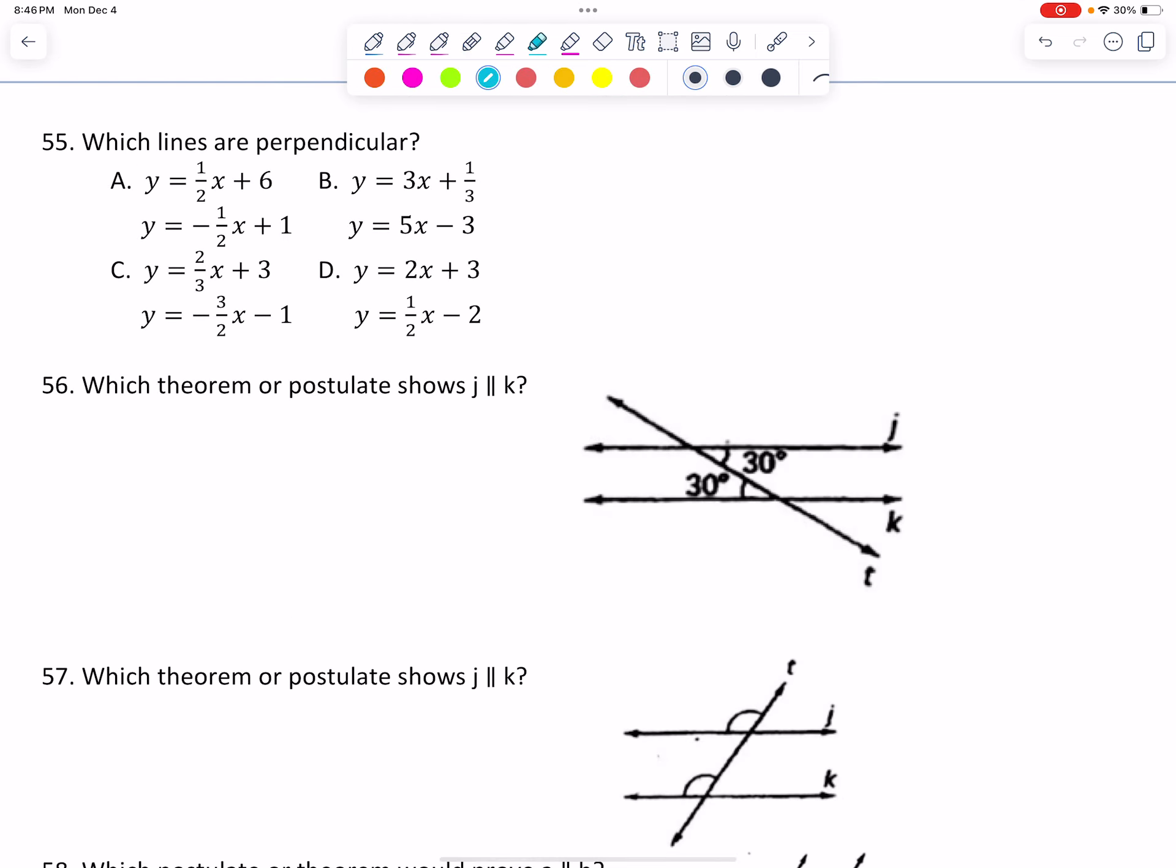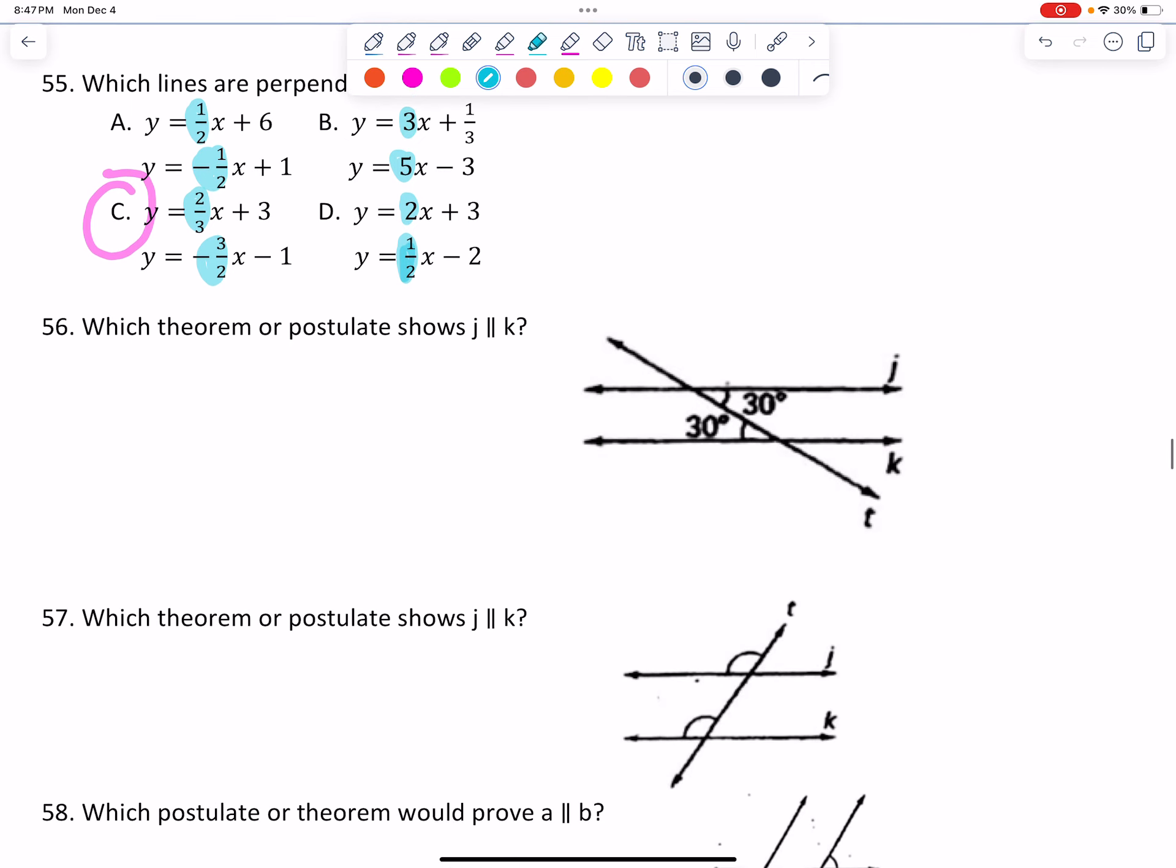Which lines are perpendicular? Again, we're just looking for opposite reciprocal slopes. That's one half. It's negative one half. It's not flipped and switched. This is three. This is five, not flipped and switched. This is positive two thirds. This is negative three halves. I'm thinking it's this one, but let's check the last one just to see. This one's positive two. This one's one half. So the fraction is opposite, but we do not have opposite signs. So it has to be C. We're just paying attention to slope on there.